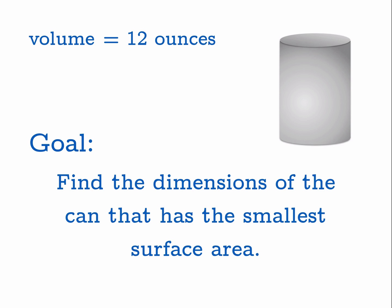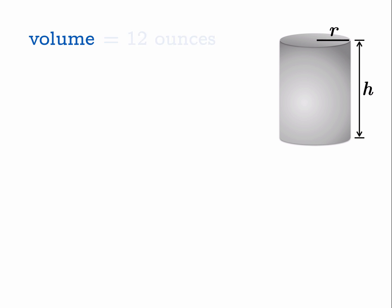Obviously the surface area depends on two quantities: r, the radius of the can, and h, the height. Now 12 ounces, if you do a little search, is 355 cubic centimeters, so we'll switch units and measure all our dimensions in centimeters.